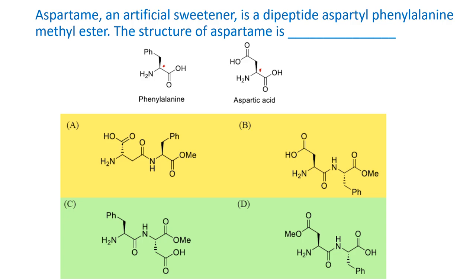In aspartic acid specifically, the second carboxylic acid group is on the beta carbon — it has two carboxylic acid groups. However, when aspartic acid forms a peptide bond with another amino acid, it is the alpha carboxylic acid that undergoes reaction to form the amide bond. The beta carboxylic acid does not participate in peptide bond formation — it is the alpha amino acid linkage that we see in all nomenclatures.